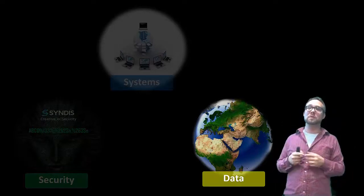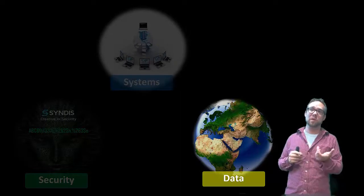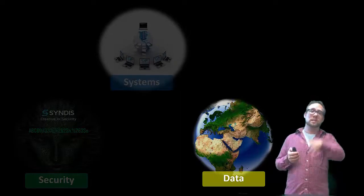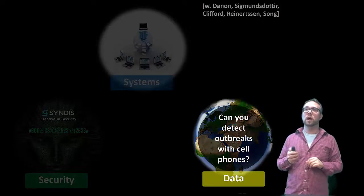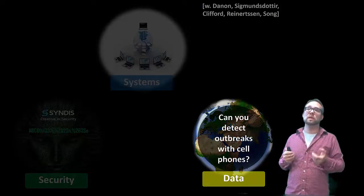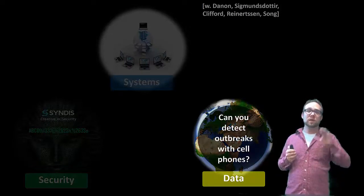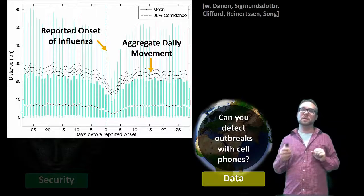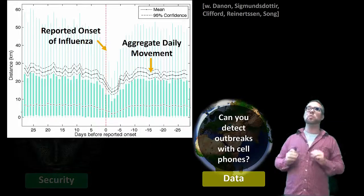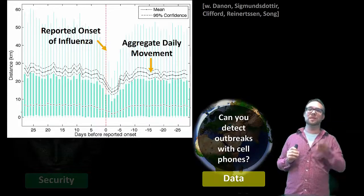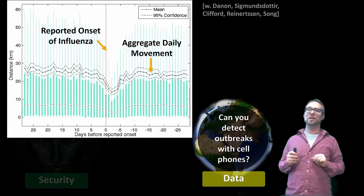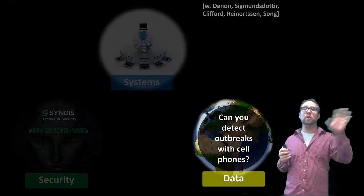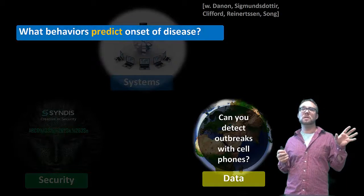The current methods we have for epidemic surveillance are pretty slow and not very accurate. Here's an example from a dataset we have where people with H1N1 influenza show movement that drops markedly after onset at day zero — day zero is when they actually got sick — and this is the aggregate movement, and it's all anonymous. We're using deep learning to try to detect more of these diseases.